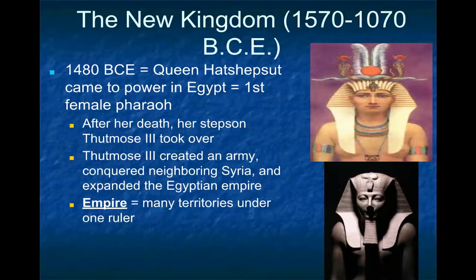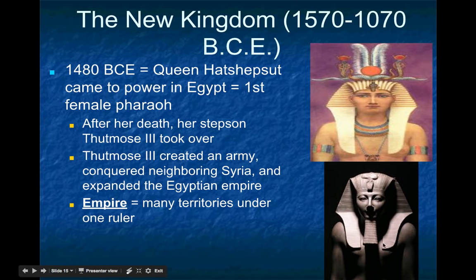An interesting characteristic of the New Kingdom is that a female pharaoh actually ruled at one point. She came to power in 1480 BCE — her name was Hatshepsut, the first female pharaoh. She ruled partly because her husband died and her young son Thutmose was too young to be pharaoh, so she started as queen regent but effectively became pharaoh. What's interesting is that Hatshepsut, despite being a queen, actually tried to identify as male so people would take her seriously — she is depicted wearing a fake beard to look like a man.